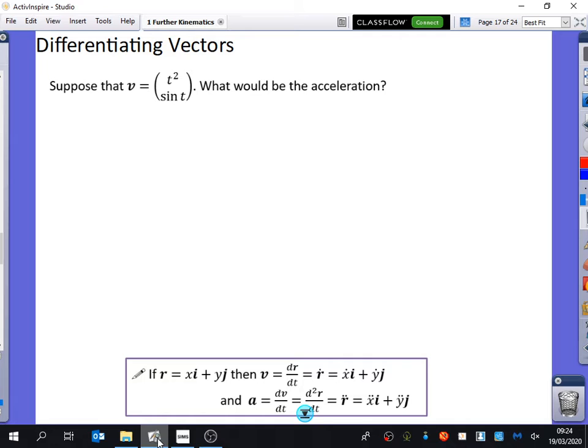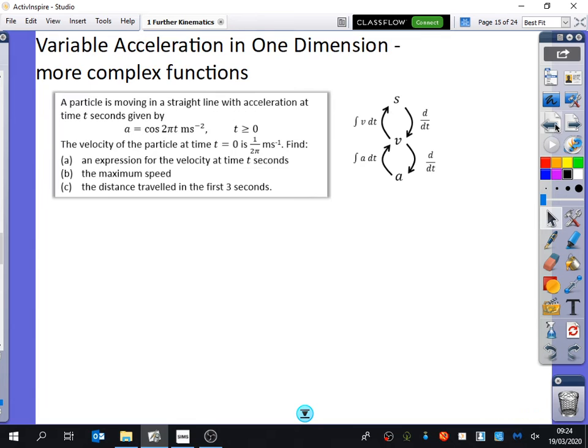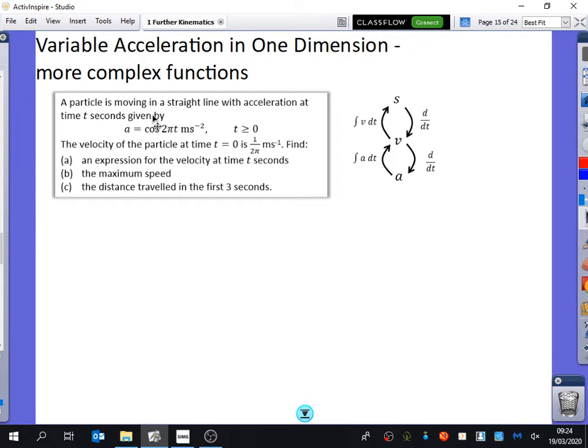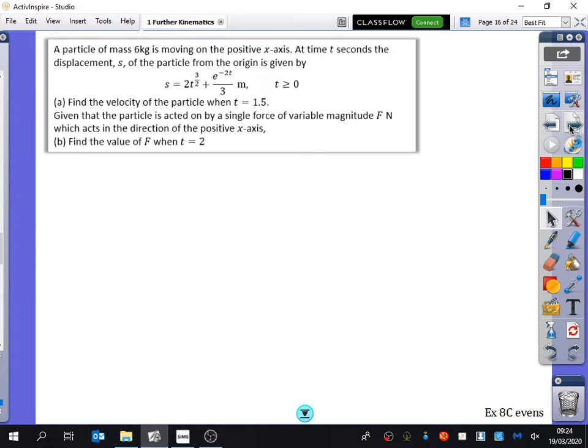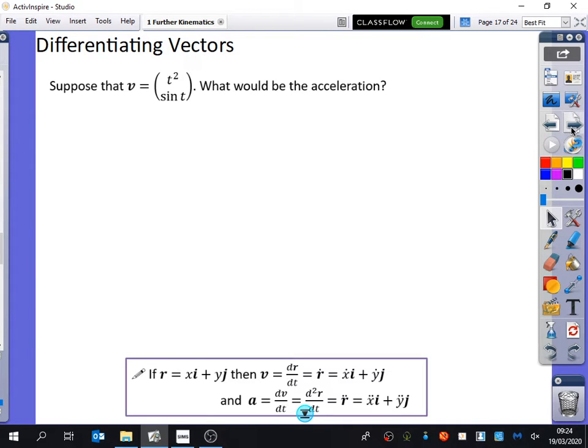Previously, we've looked at variable acceleration like these kind of questions, where we had something that was just moving in a straight line, because it only had one dimension. The acceleration was one dimensional. It was either going to the right, or it was going to the left. So now we start looking at things where you have vectors.